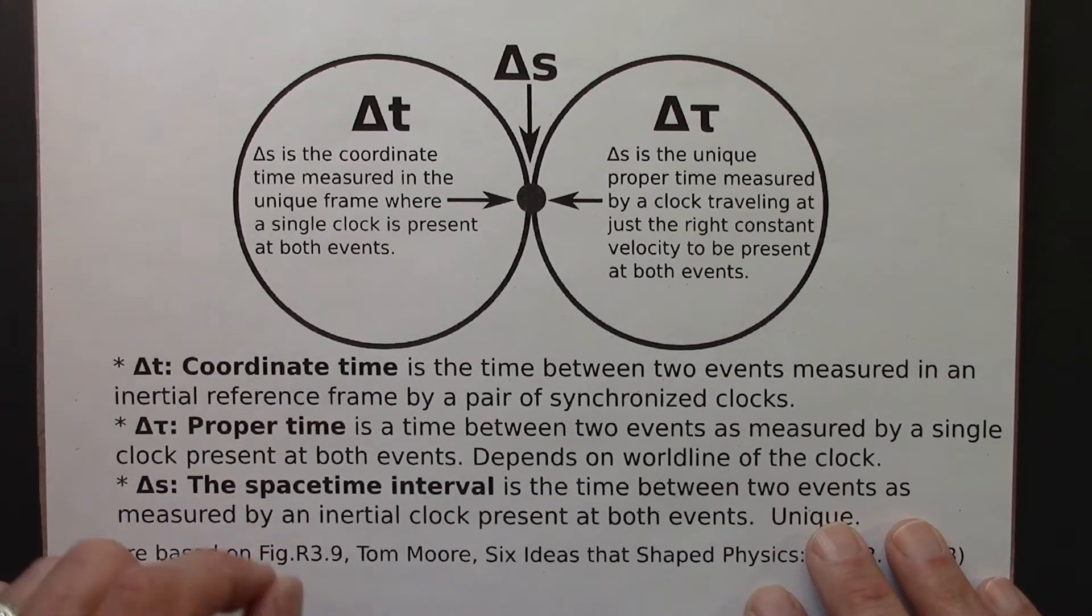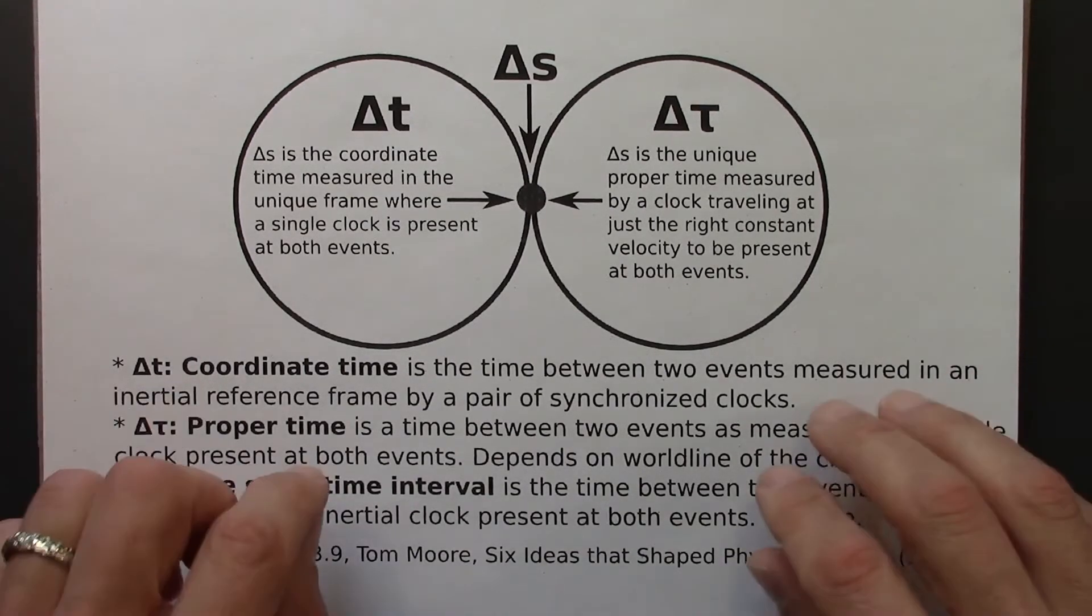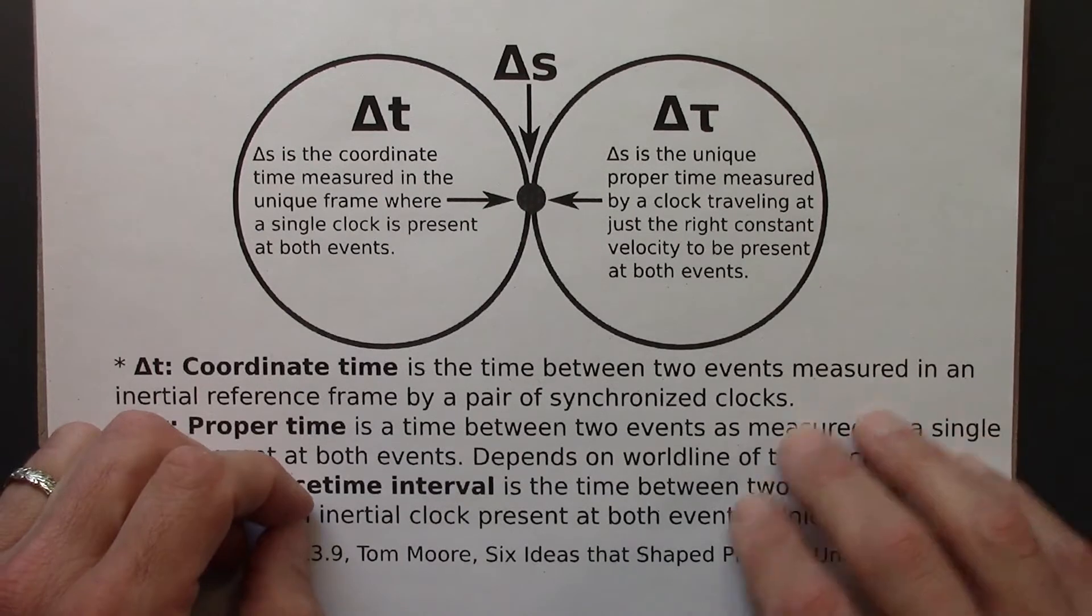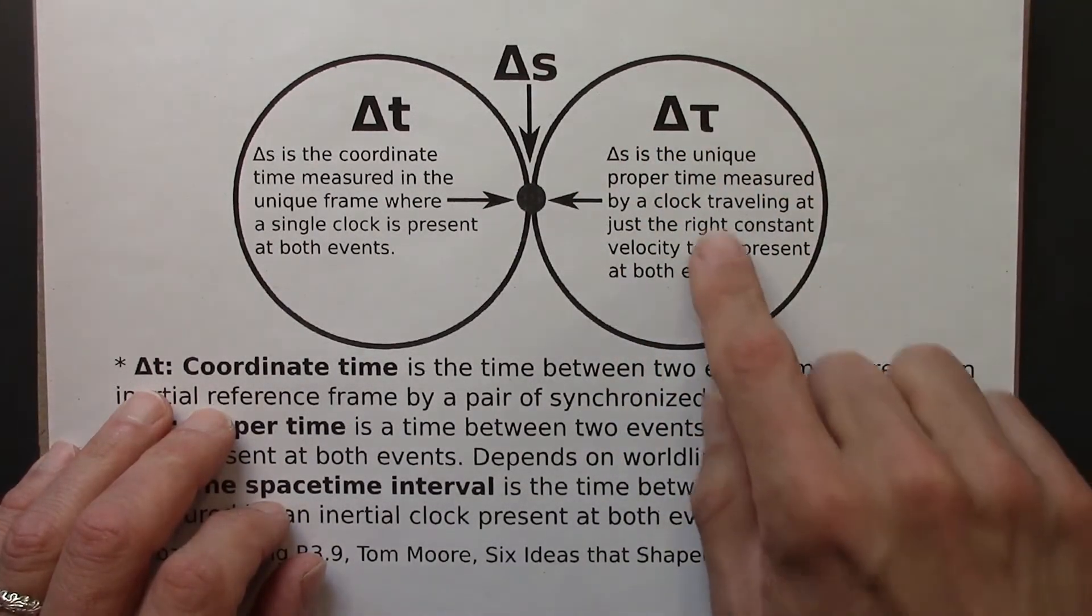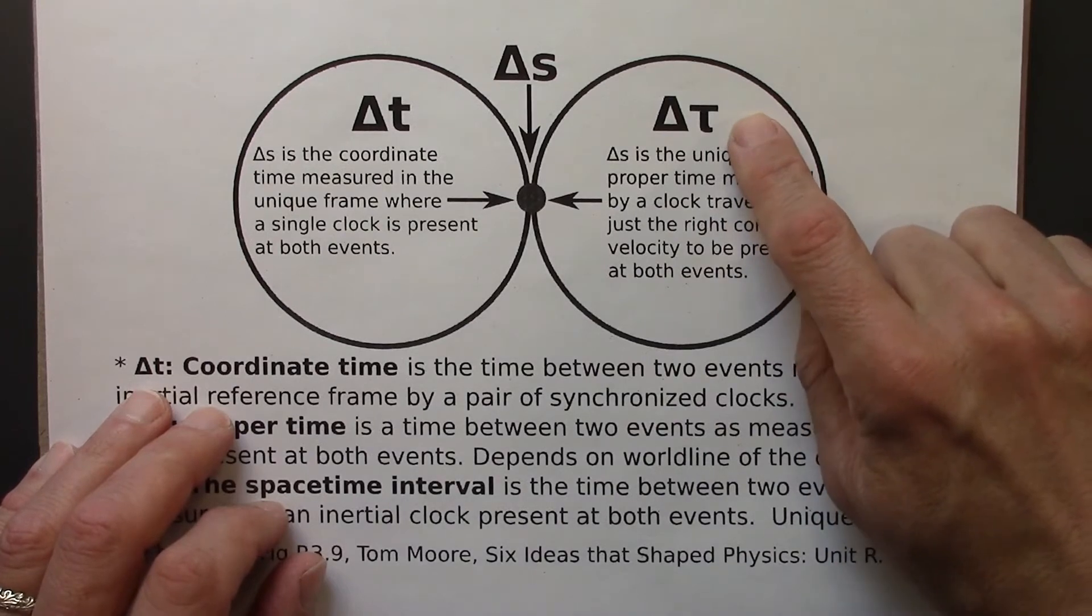All right. So let's consider two arbitrary events in spacetime, a and b. And there's lots of time intervals between them. So let's start here. There are many, many different proper times delta tau.